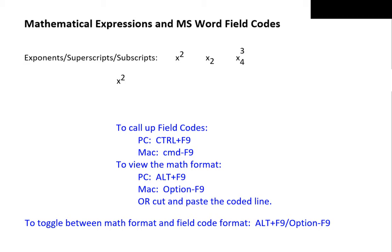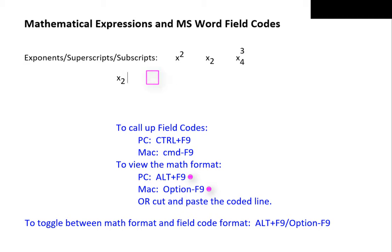For a subscript, we want the character to go down. We press Alt+F9 for a PC and Option+F9 for a Mac to toggle to the field code mode. We change 'up' to 'do' for down. Press Alt+F9 or Option+F9 to toggle back to the actual math expression, and we have our subscript.